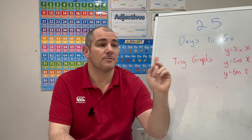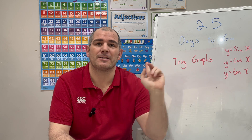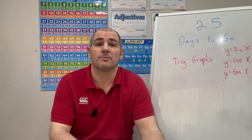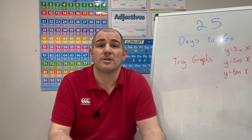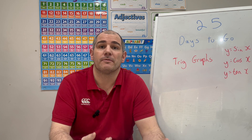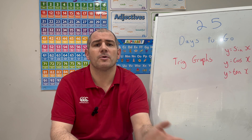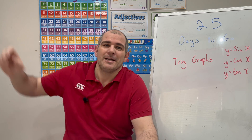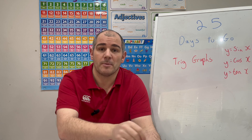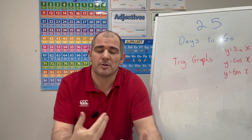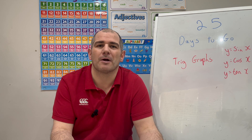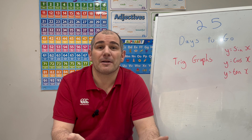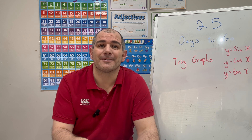So graphs such as y equals sine x, y equals cos x, and y equals tan x. In this video we're going to go through those graphs, what they look like, and some typical questions you might encounter. Feel free to press pause to jot down what the graphs look like. If you've got window pens, write them on your window. If you're making a cheat sheet, make sure you put those on the cheat sheet, because it's important to be able to spot what those graphs look like.